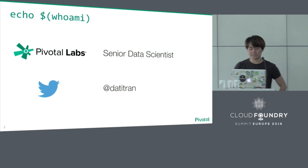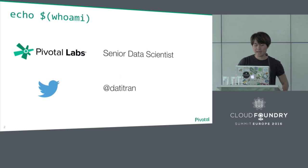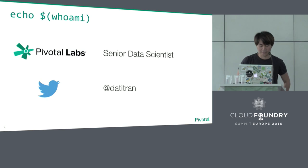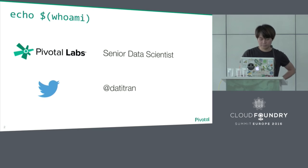My name is Dad Tren and I'm a senior data scientist at Pivotal Labs. I'm based in the Berlin office and my job is to help clients make full use of their data. If you would like to connect with me, this is my Twitter handle.